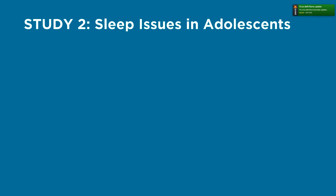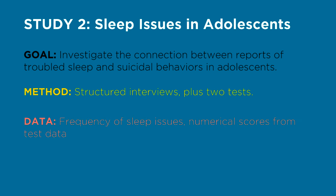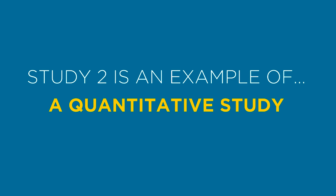Our second example is about sleep issues as a risk factor for suicidal behavior in depressed children and adolescents. The goal of this study was to investigate the association between sleep complaints and suicidal behaviors in this population. The method was a structured interview about sleep — the same questions for every participant — plus two tests: the Children's Depression Rating Scale and the Children's Global Assessment Scale. The data consisted of frequency of sleep issues from the interviews as well as a numerical score for the two scales. The researchers used statistical analysis and presented information about the correlation between variables using tables. This is an example of a quantitative study.